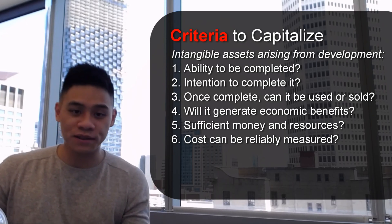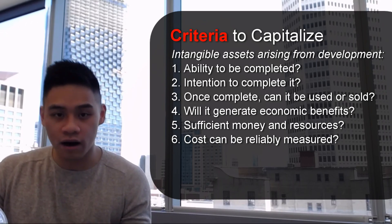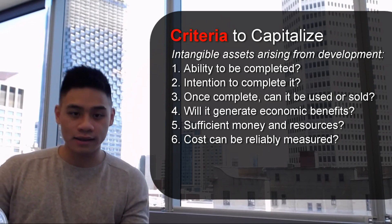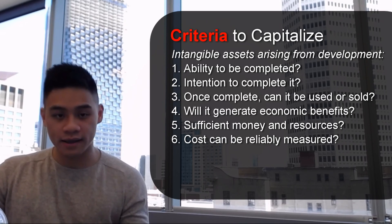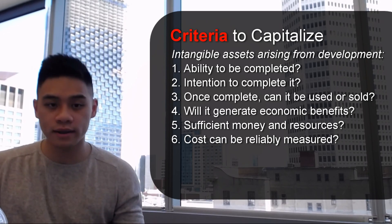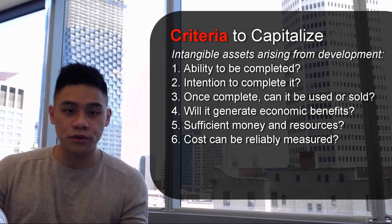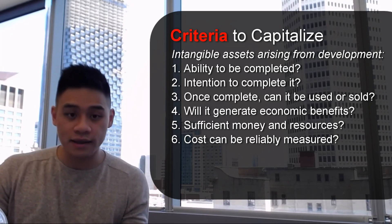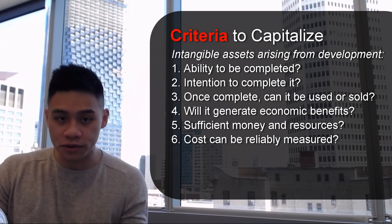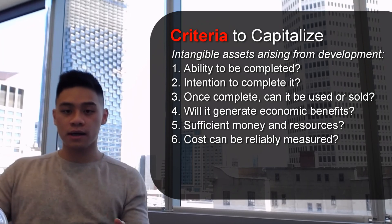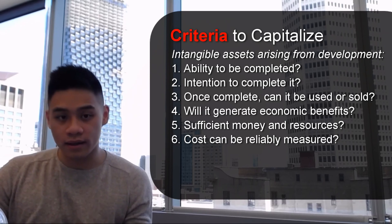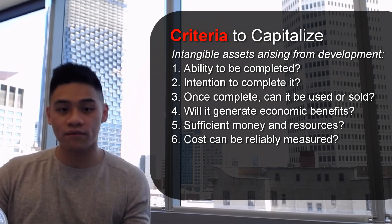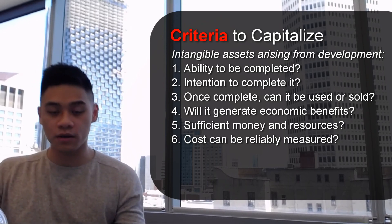For the third point: externally, is there an existence of a market for that output? And internally, is there a usefulness of the intangible asset? The fourth point is, once it is used or sold, will it generate economic benefits? The fifth point is whether there are sufficient money or resources to carry out the completion and selling of the intangible asset. The sixth point is whether the cost and value of the intangible asset can be reliably measured.